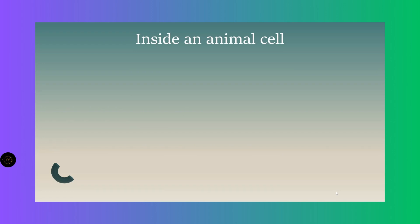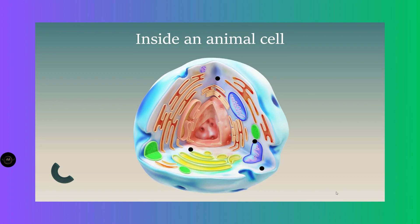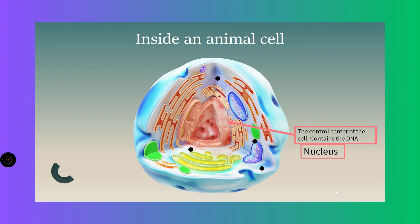An animal cell is made of different cell organelles, and each of these cell organelles has a specific function. The first thing you have is this pink thing that the arrow is pointing to — it's called the nucleus. Inside of the nucleus you have the DNA or genetic material. The nucleus is like the big boss of the cell because it controls everything going on inside.